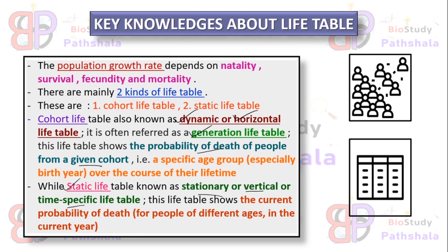The difference between the cohort life table and the static life table: the cohort life table is for a specific age group but covers the whole lifetime for that population, while the static life table covers all ages for a population but for an exact time or current year. The population growth rate — numbers of surviving individuals and dying individuals — depends on natality, survival, fecundity, and mortality.